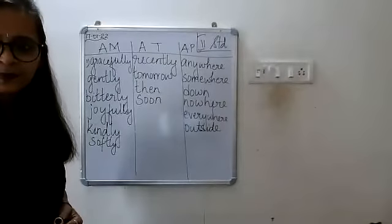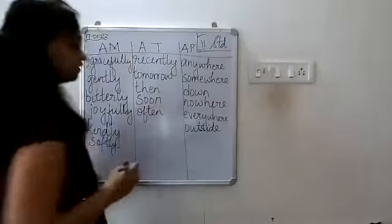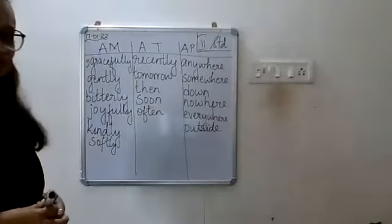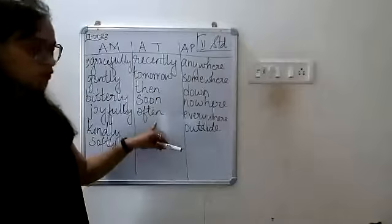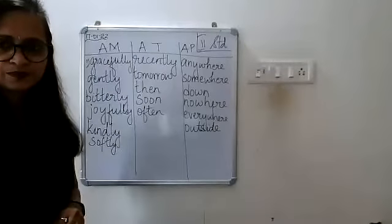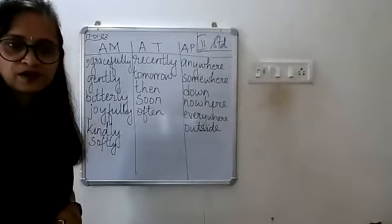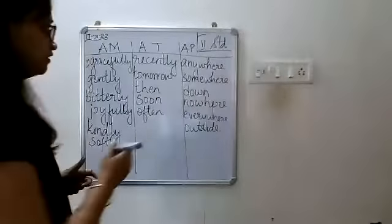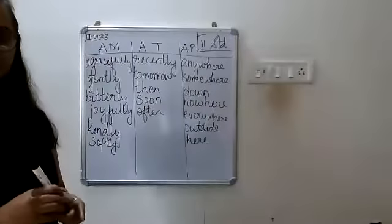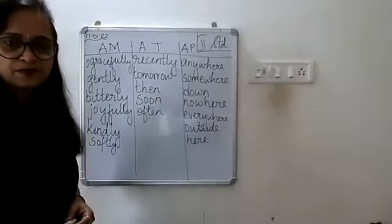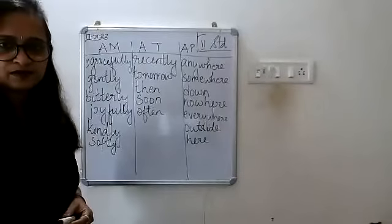Next word is 'often' — adverb of time, very good. Below 'soon,' write O-F-T-E-N. Then 'here' — adverb of place. Below 'outside,' write H-E-R-E. Next word 'there' — also adverb of place. Below 'here,' write T-H-E-R-E.